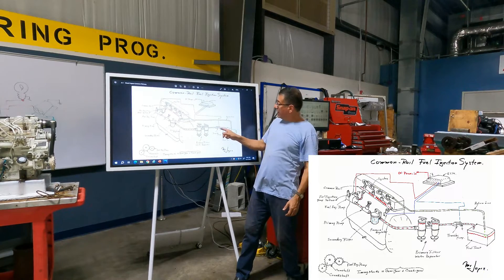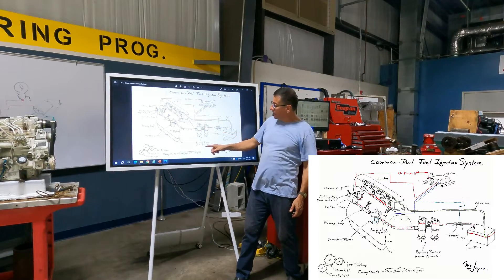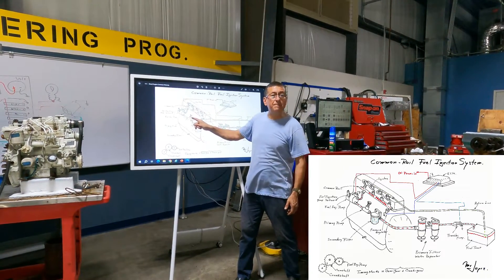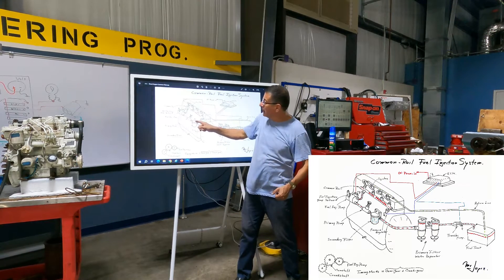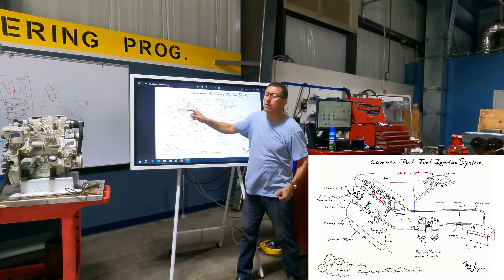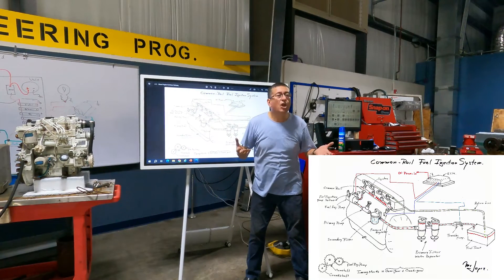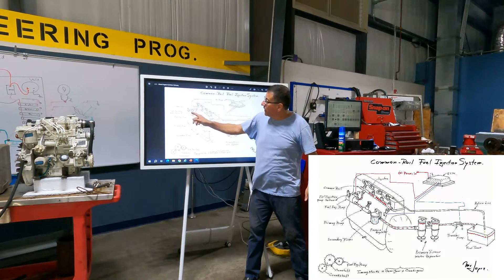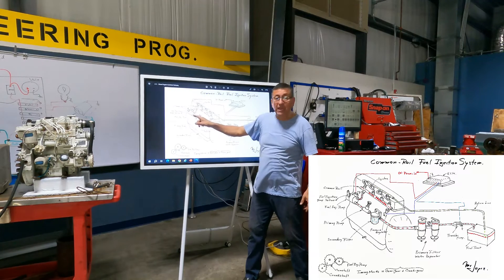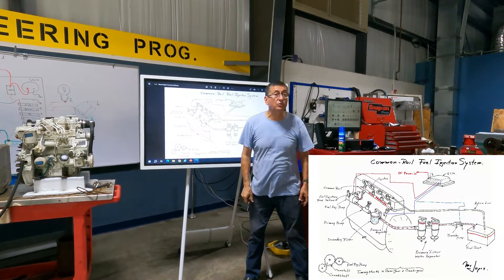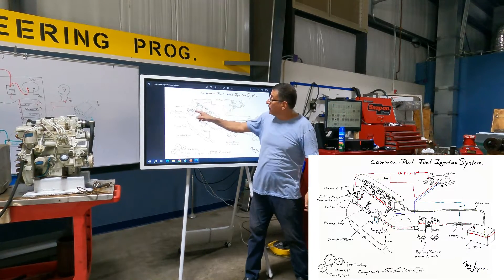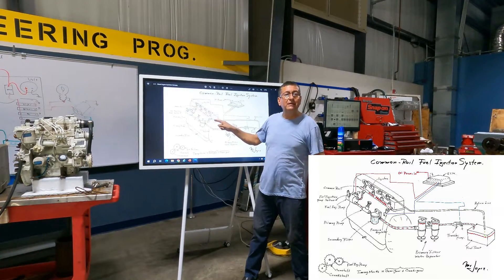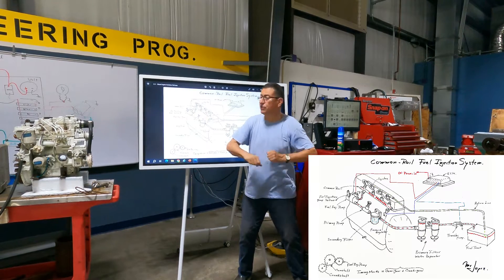The system is the same: fuel tank, transfer pump, primary filters or water separators, secondary filter, then priming pump or lifting pump, and after that the fuel injection pump - the common rail pump. The common rail pump can be electrical or mechanical - no problem. It receives low pressure at the input and sends high pressure at the output, more than 7,000 PSI. With that pressure it pressurizes the common rail.